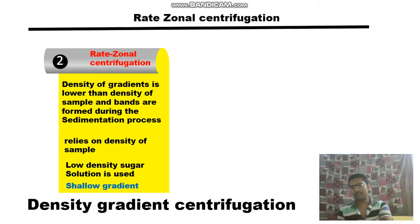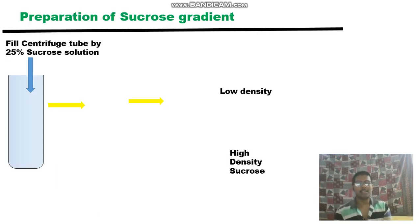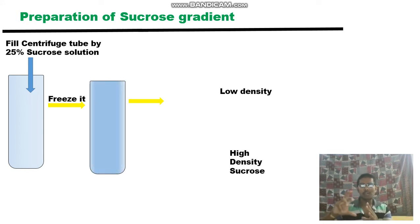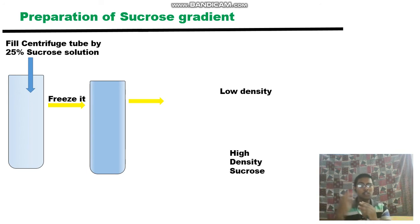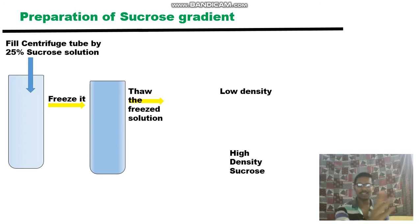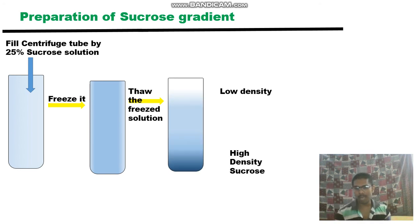Preparation of the sucrose gradient is an important step for rate-zonal centrifugation. You form a 25% sucrose solution in a centrifuge tube, then freeze it — freezing creates a dense sugar solution throughout the tube. When you thaw it, it creates a density gradient: low density at the top and high density at the bottom.